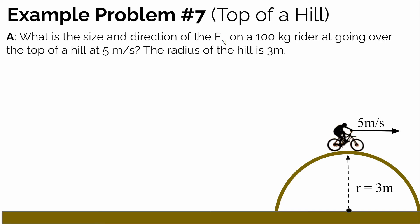In this video, we're going to talk through a few example problems related to an object — in this case, a biker — going over the top of a hill. In the first case, we're going to figure out the forces this biker experiences as they go over the top at that instant. They're following a circular path, so this is a vertical circular motion problem. The question is: what is the size and direction of the normal force on a 100-kilogram rider going over the top of a hill at 5 meters per second, where the radius of the hill is 3 meters?